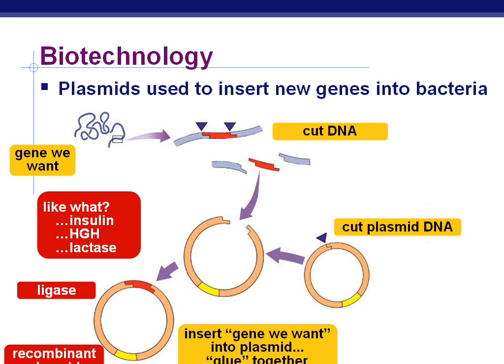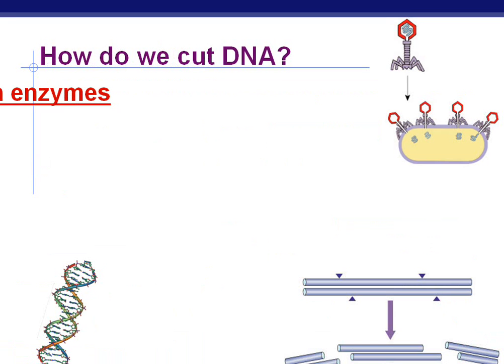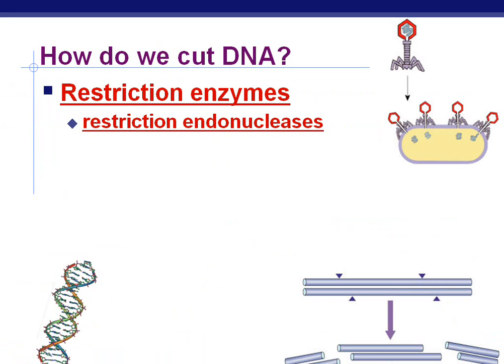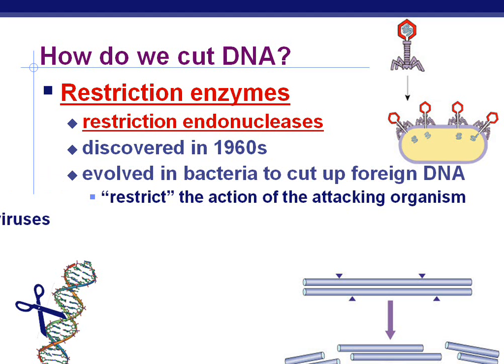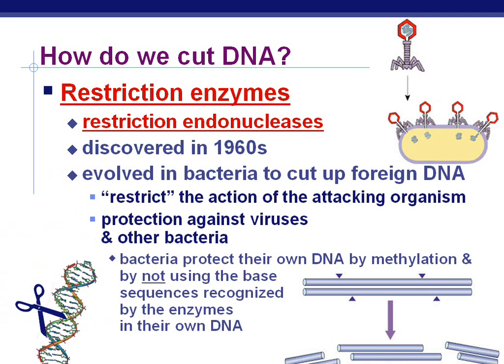Do we have DNA scissors? No. We use restriction enzymes, otherwise known as restriction endonucleases. This was actually discovered in the 1960s and evolved in bacteria to cut up foreign DNA, so as to restrict the action of the attacking organism — a protection against viruses and other bacteria. Bacteria protect their own DNA by methylation and not using the base sequences that are recognized by the enzymes in their own DNA.